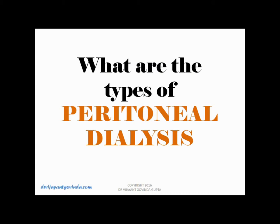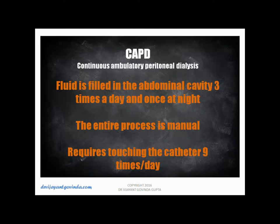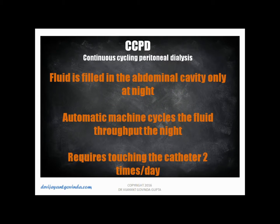What are the types of peritoneal dialysis? The first is CAPD — Continuous Ambulatory Peritoneal Dialysis — which we will show in the video. Fluid is filled in the abdominal cavity three times a day and once at night. The entire process is manual but requires touching the catheter nine times a day, which can increase the chances of infection. The second is CCPD — Continuous Cycling Peritoneal Dialysis — where fluid is filled only at night by an automatic machine that cycles the fluid throughout the night, requiring touching the catheter only twice, significantly reducing infection risk.